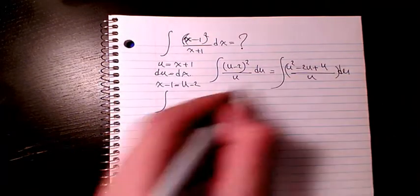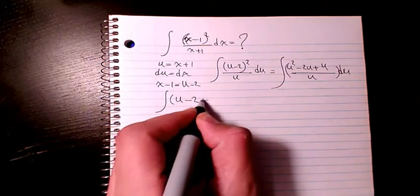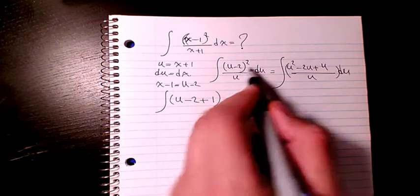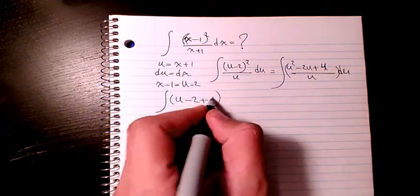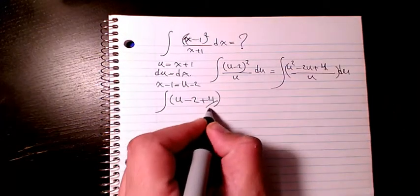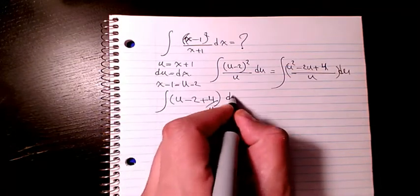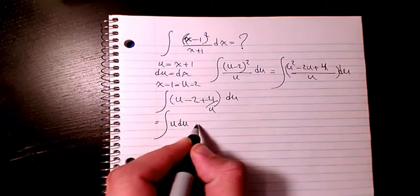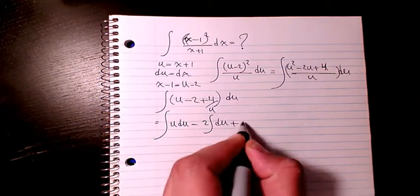Then I can write it like u minus 2 plus... this is actually just 4, so it's gonna be plus 4 divided by u du. So I can separate them. It's gonna be u du minus 2 du plus 4 du over u.